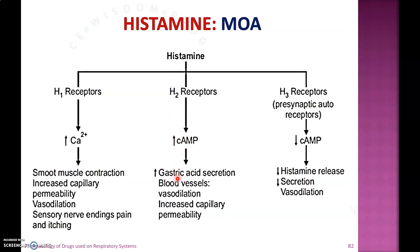When histamine binds with the H2 receptor, it increases cyclic AMP, producing responses such as increased gastric acid secretion from the parietal cells of the GI tract, vasodilation in blood vessels, and increased capillary permeability. When histamine binds with the H3 receptor, it decreases cyclic AMP, leading to decreased histamine release, decreased neurotransmitter secretion, and vasodilation.